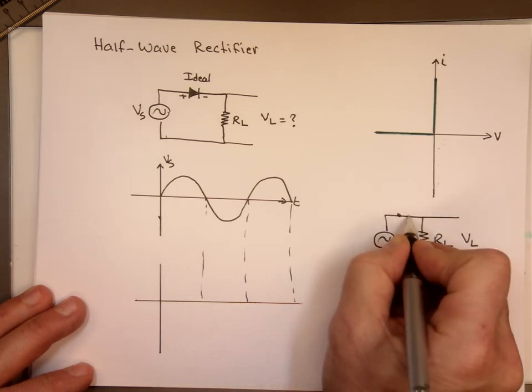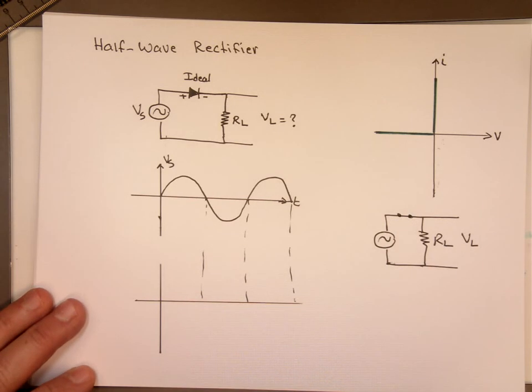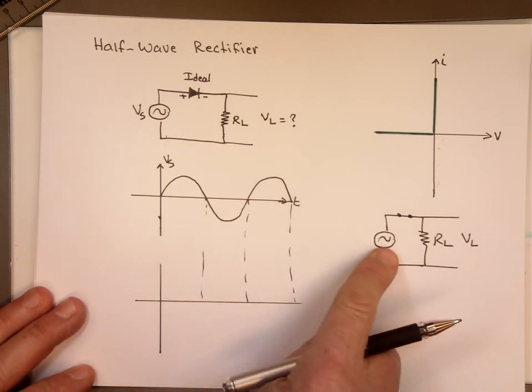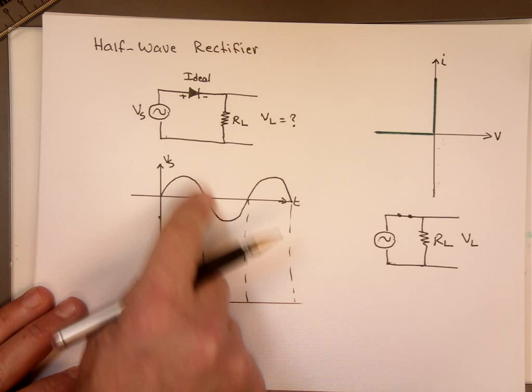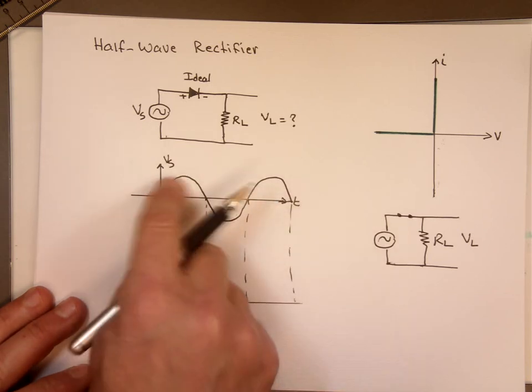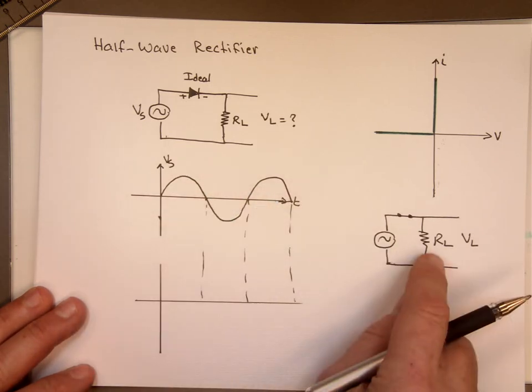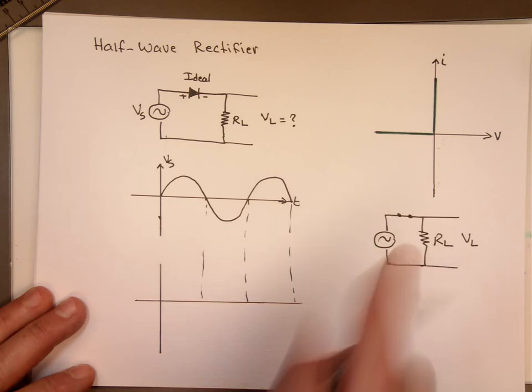This is short now. It's like a wire connecting that. But that's only true when this is in the positive end of this. So in this section, in this section, that's true, which means these guys are in parallel. They will have the same voltage.